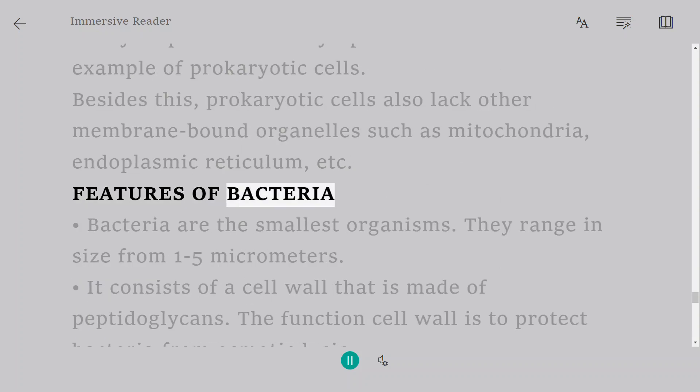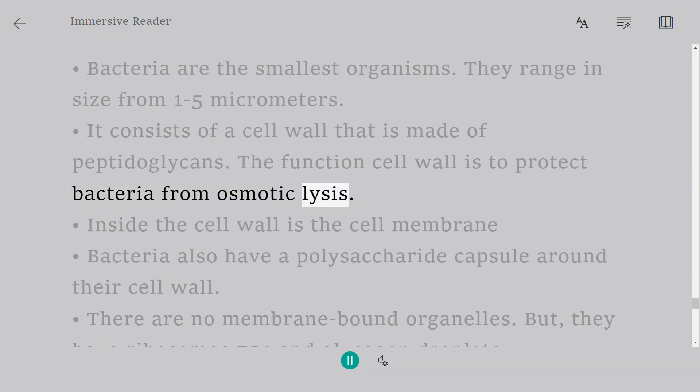Features of Bacteria. Bacteria are the smallest organisms. They range in size from 1 to 5 micrometers. It consists of a cell wall that is made of peptidoglycans. The function cell wall is to protect bacteria from osmotic lysis. Inside the cell wall is the cell membrane. Bacteria also have a polysaccharide capsule around their cell wall.